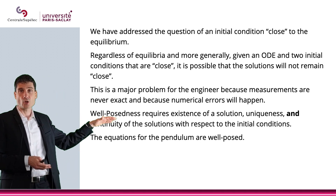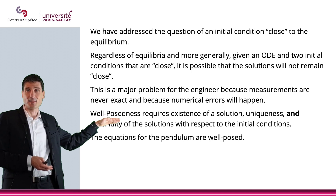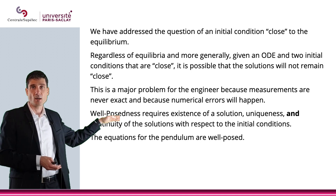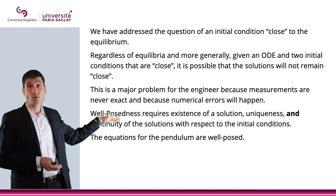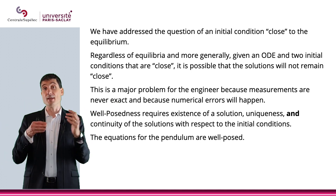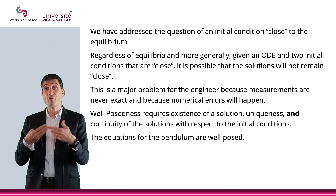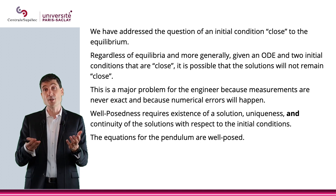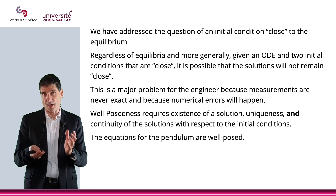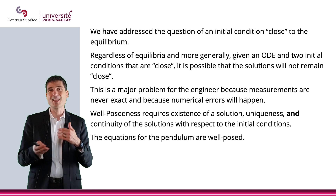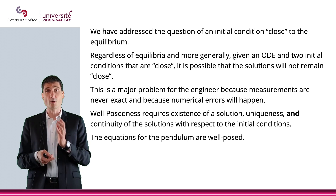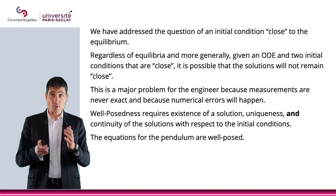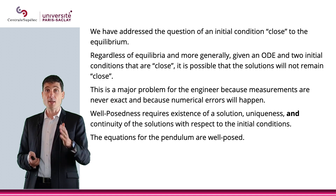Basically, when you start with your pendulum, if it's not exactly 90 degrees (pi over two), but it's like 91 degrees or 89 degrees, then it's not going to be a big deal. The solutions coming from these initial conditions will somehow look the same — not exactly the same, but close to one another. So that's the situation for the pendulum.